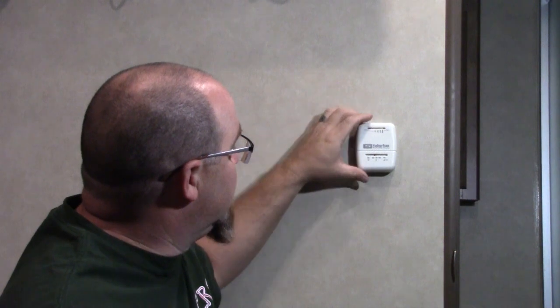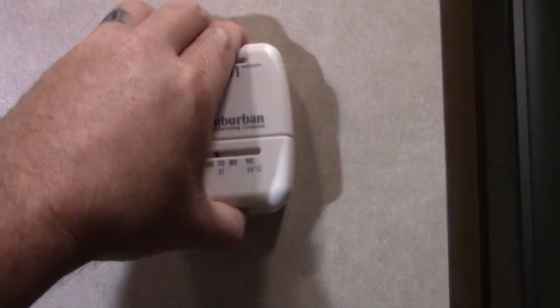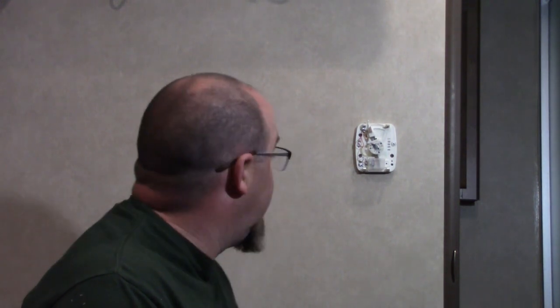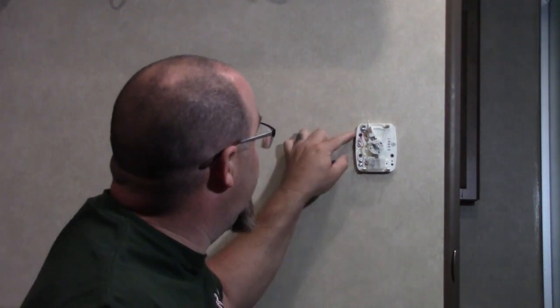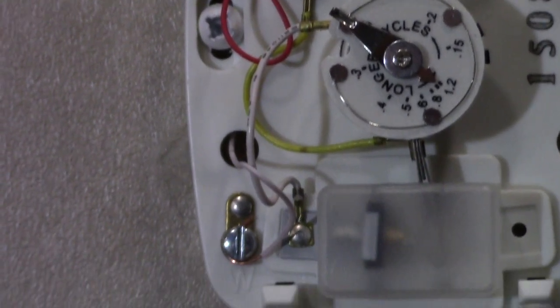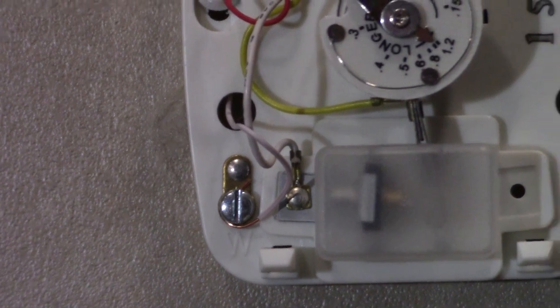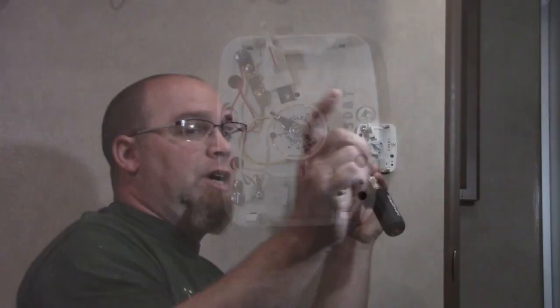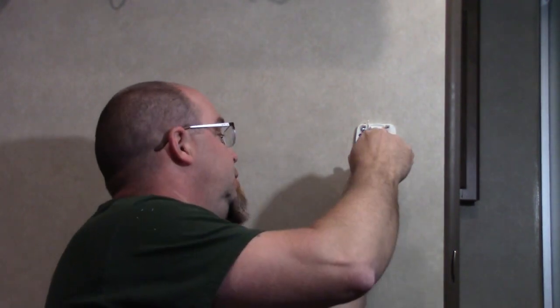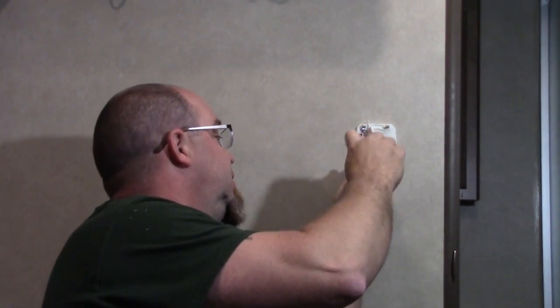The first process is to pop the cover off, snaps off relatively easily. Then we've actually got two wires on this unit, there is a W and R. It's red and white, great it's color-coded but not always will it be color-coded. We've got the battery disconnected on the camper so there's no power coming to this and we're gonna disconnect it just simply by unscrewing it and taking it loose.